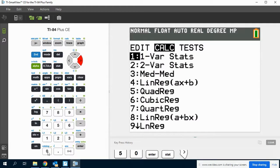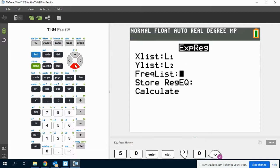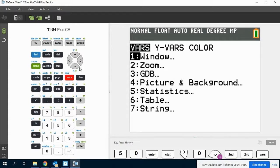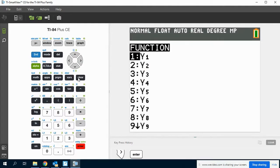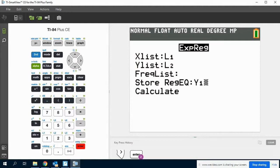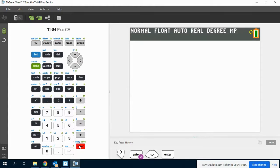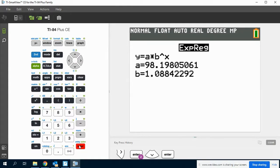So now we're going to go to exponential regression, and I will store this. I keep hitting second, but I don't want to. I will store this in my y equals. And I may need it to answer the next part of the problem. I get 98.19805061 times 1.08842292x.